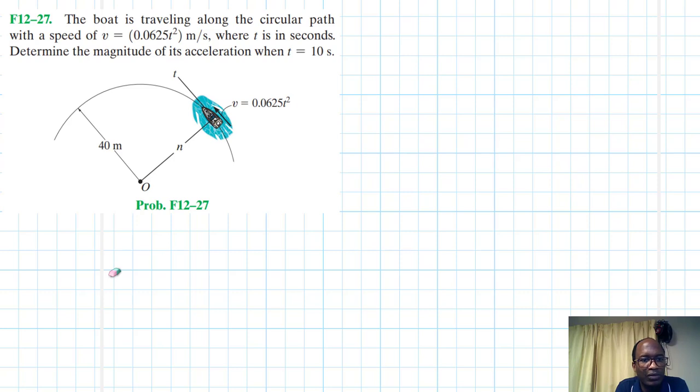So we have a boat here that is traveling along a circular path. And its speed, we've been told, is 0.0625 t squared, where t is in seconds. We have been asked to determine the magnitude of its acceleration when t is equal to 10 seconds.